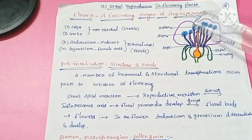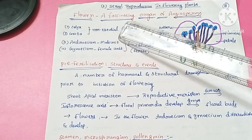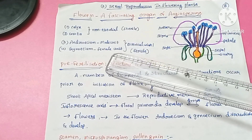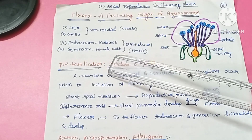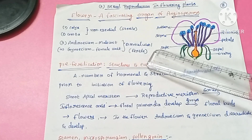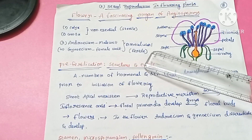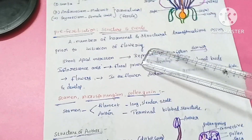Calyx and corolla together are called the non-essential whorl, which are sterile in nature. Whereas androecium and gynoecium are the essential whorl of the flower. Androecium is the male reproductive part and gynoecium is the female reproductive unit. These two are called essential whorl because they are involved in reproduction and are fertile in nature.